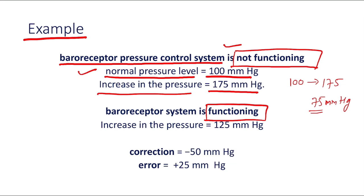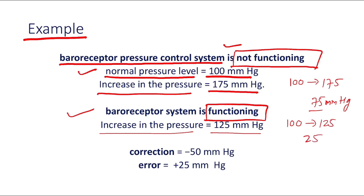Now, when the baroreceptor system is functioning. In this condition, the normal pressure is 100 mmHg, but the pressure increases to 125 mmHg. So even when the baroreceptor pressure system is functioning, pressure rises from 100 to 125 mmHg — an increase of 25 mmHg.